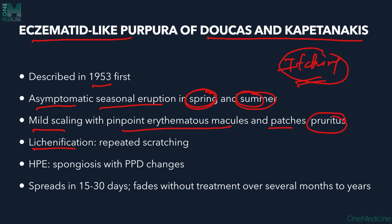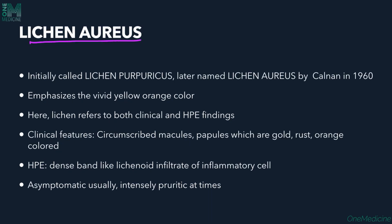Histopathologically, since it is an eczematous condition, spongiosis — swelling of the stratum spinosum layer — is seen along with other PPD changes. The lesions spread over 15 to 30 days and fade without treatment over several months or years, making it a self-limited condition.